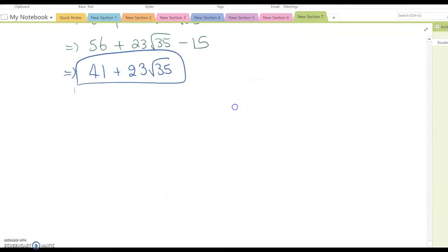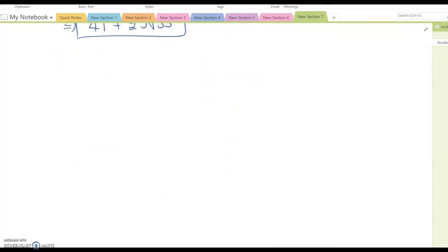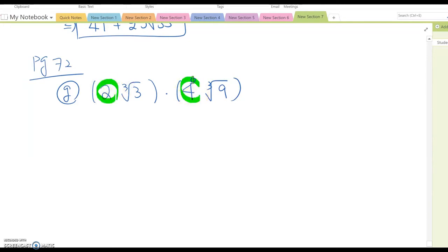Let's look at more examples such as page 72 letter G. If you look at letter G, it shows 2 cubic root 3 times 4 cubic root 9. 2 and 4 are the rational numbers, so you may multiply only these two. And then cubic root 3 and cubic root 9 are the radical numbers, so you only multiply between them.